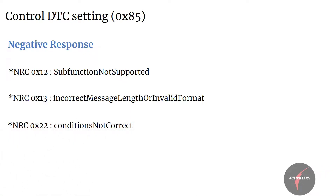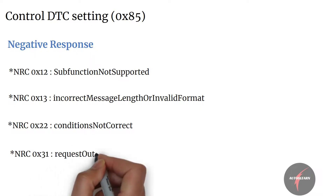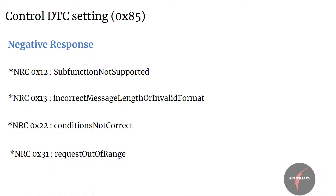NRC 22, that is condition not correct. NRC 31, that is request out of range — this NRC shall be sent when the server detects an error in the DTC Setting Control Option Record.